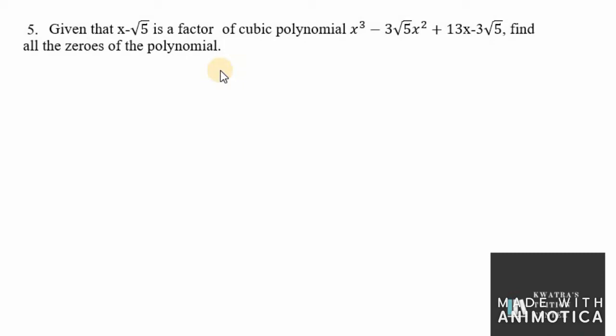The polynomial is a cubic type, so it must have three zeros. One zero is already given to us, and the other two we need to find. First of all, we need to perform long division method.